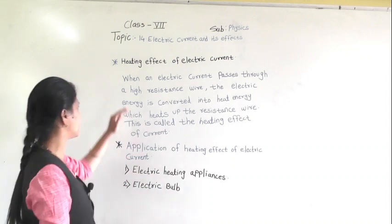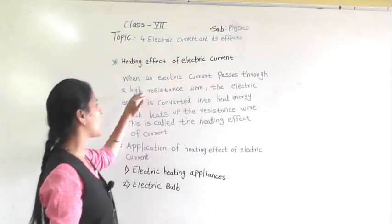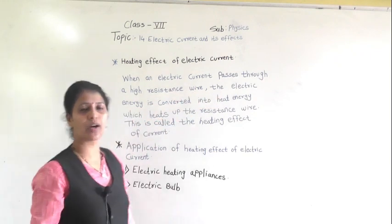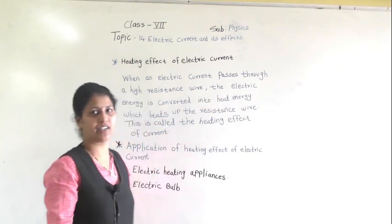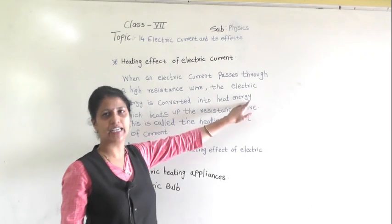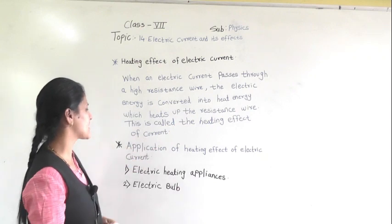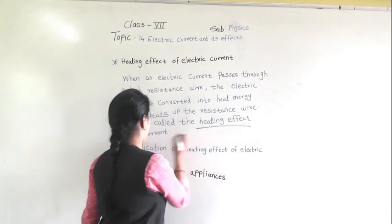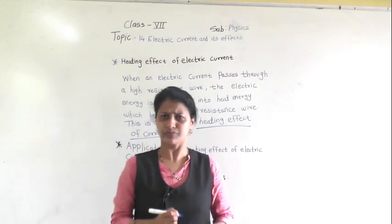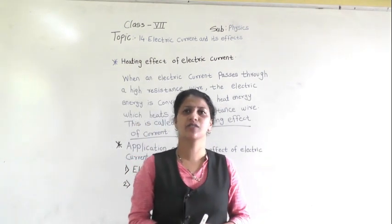What is the heating effect of electric current? When an electric current passes through a high resistance wire, the electric energy is converted into heat energy, which heats up the resistance wire. This is called the heating effect of electric current.